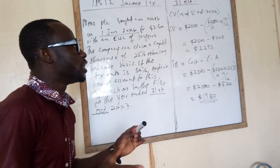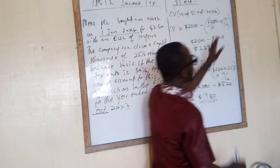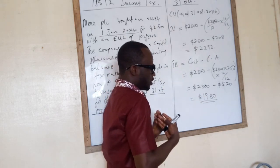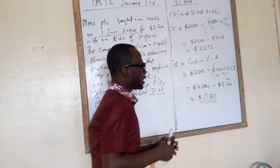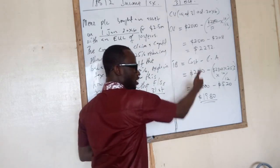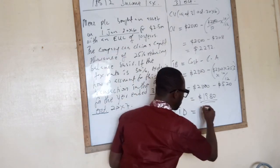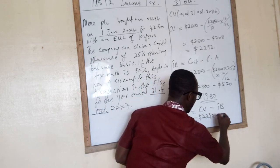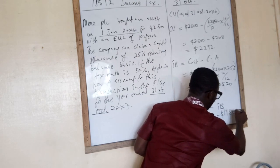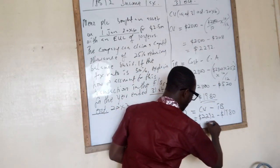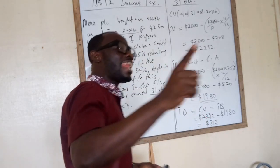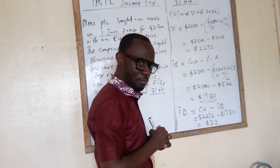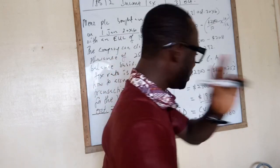So as at 31st October 20X, the carrying value of the asset is $2,292, but the tax base of the asset from the tax authority's perspective is $1,980. This leads us to what we call temporary difference. To find the temporary difference, we say it should be the carrying value minus the tax base: $2,292 minus $1,980. The temporary difference is $312. When the temporary difference is positive, it leads to a deferred tax liability.